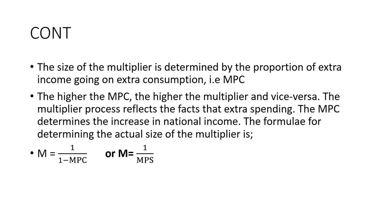The multiplier can also be calculated by taking one over one minus the marginal propensity to consume, or equivalently, one over the marginal propensity to save. You remember the formula of marginal propensity to save. At this time, there is an exercise: given the change in income and expenditure, or given the marginal propensity to save or marginal propensity to consume, calculate the multiplier.